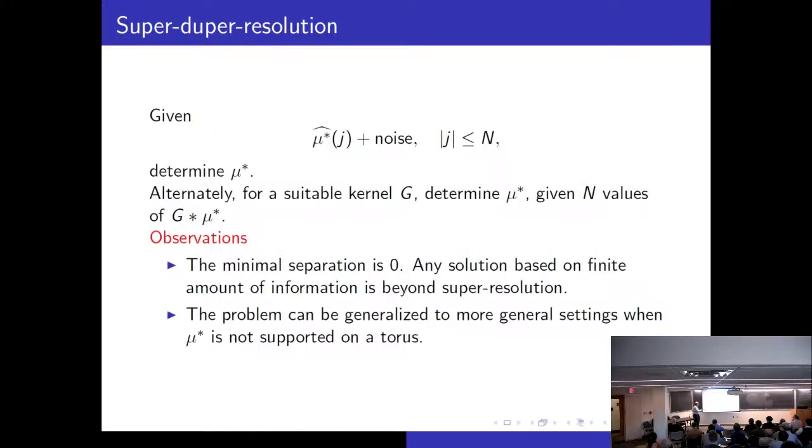So the idea is that I think of this as a certain measure μ* and then these quantities which were given to us are the trigonometric moments of this measure. And now the question becomes: I know the trigonometric moments of a certain measure plus some noise and I want to determine what this measure is. So this is probably a hard problem from the previous point of view because now there is no minimal separation.